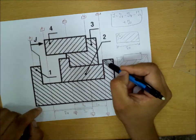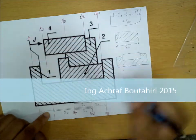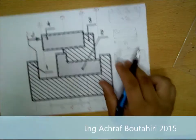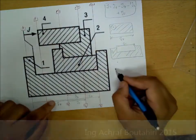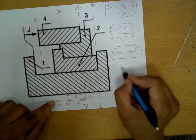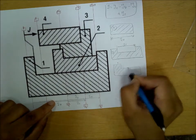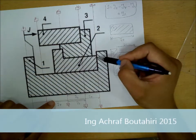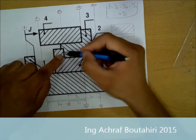And also for item number 2 — if we draw it like this — the distance between this surface to this surface, we will call it G2, from here to here.